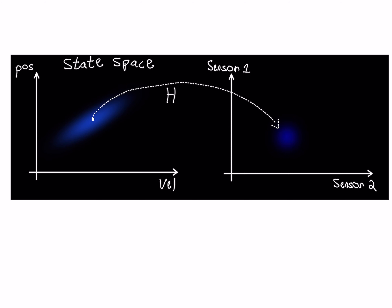If you remember from the last video, we have the state space and then we move to the sensor space — so this point over here will move to this point over here. But this is not so simple, because sometimes our sensor is noisy. So the transformation from the state space to the sensor space includes uncertainty, which comes as a result of the physics of the sensor.